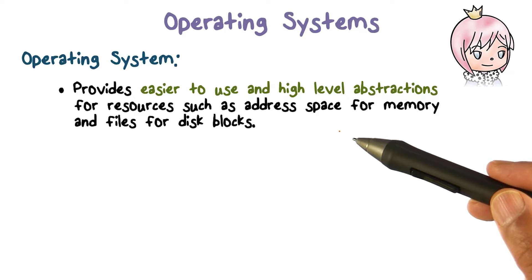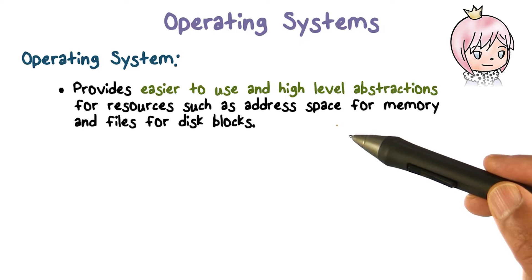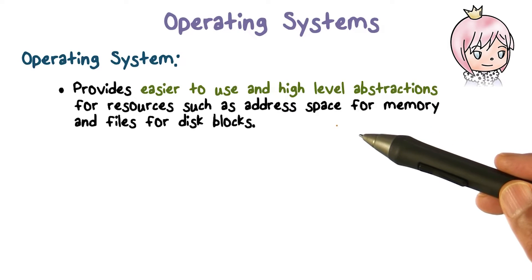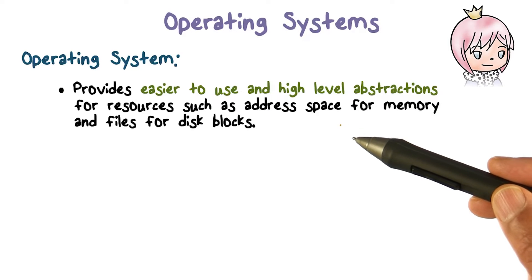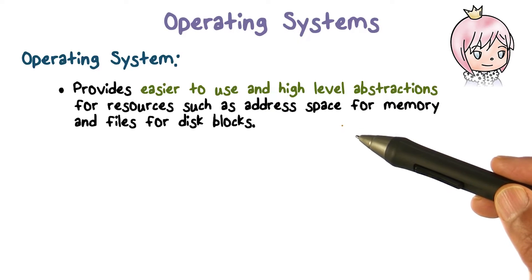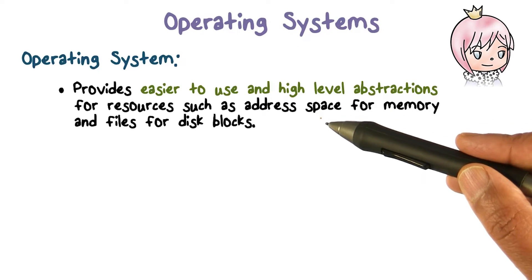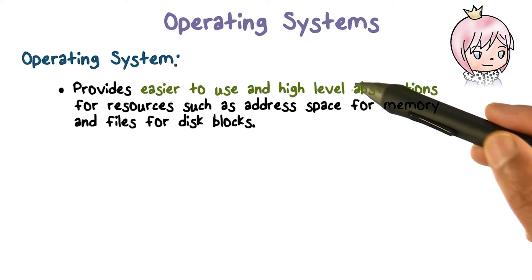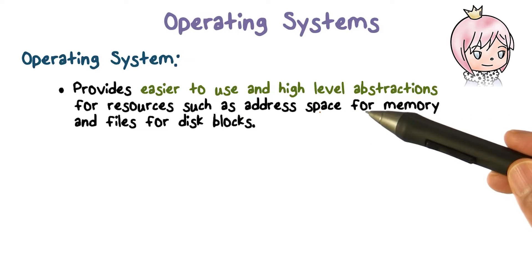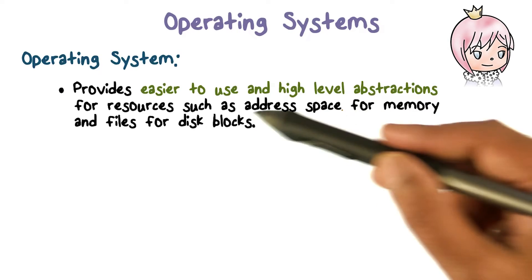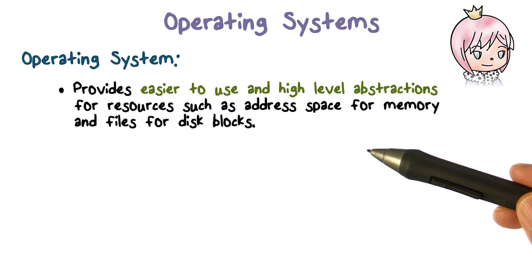For example, we know that data that must be persistent is stored on the disk, in disk blocks. We actually don't directly work with disk blocks and keep track of where on disk a certain piece of information may be. We have things called files. Think of a file as a high level virtual resource that is created or supported by the operating system and made available to you. These high level abstractions make it easier for us to write and build applications that are going to run on this computer system.